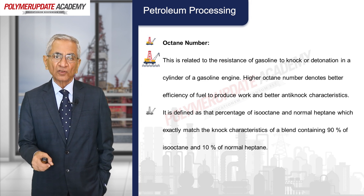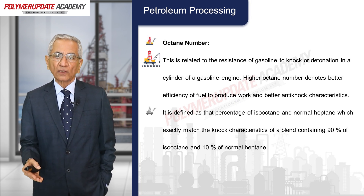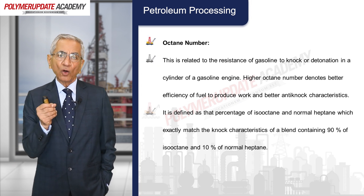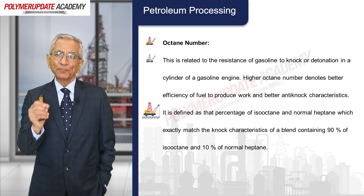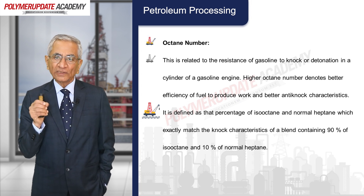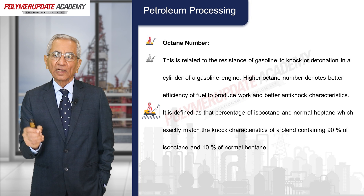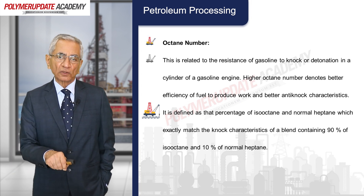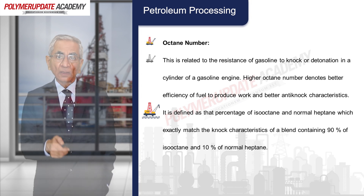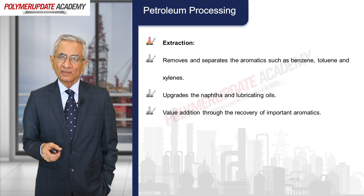Higher octane number denotes better efficiency of fuel to produce work and better anti-knock properties. Octane number is defined as the percentage of isooctane in a blend of isooctane and normal heptane that exactly matches the knock characteristics of the fuel being tested. Earlier, more than 50 years ago, gasoline would not fire well and would produce a knocking noise — that problem is now addressed through alkylation.